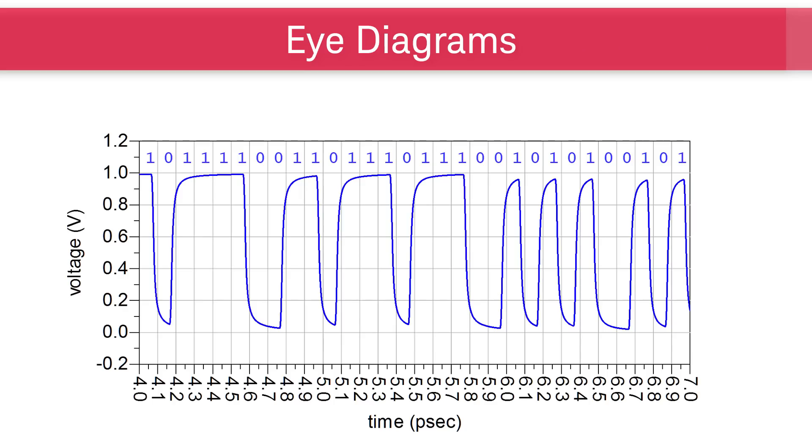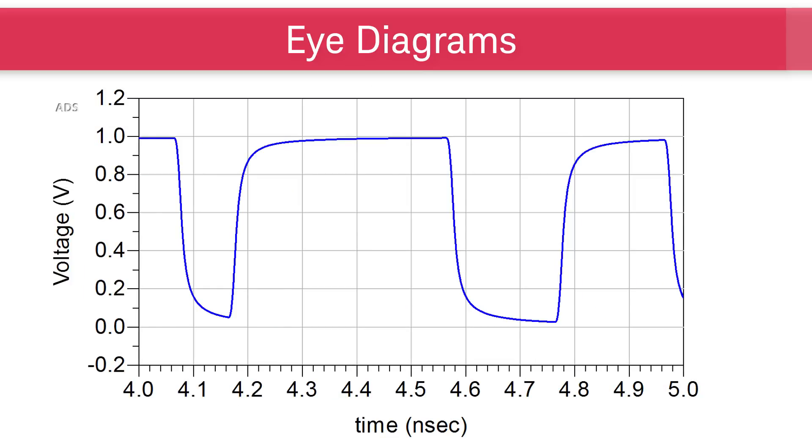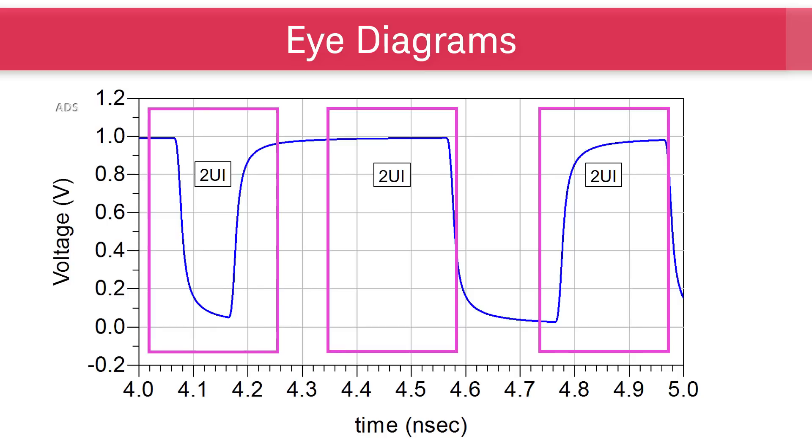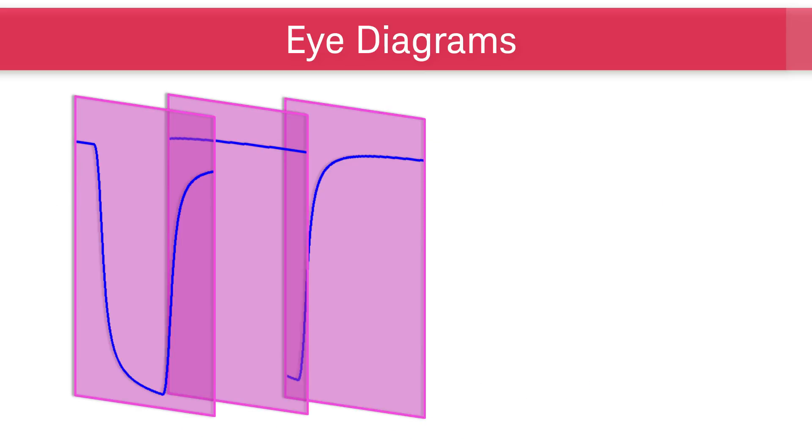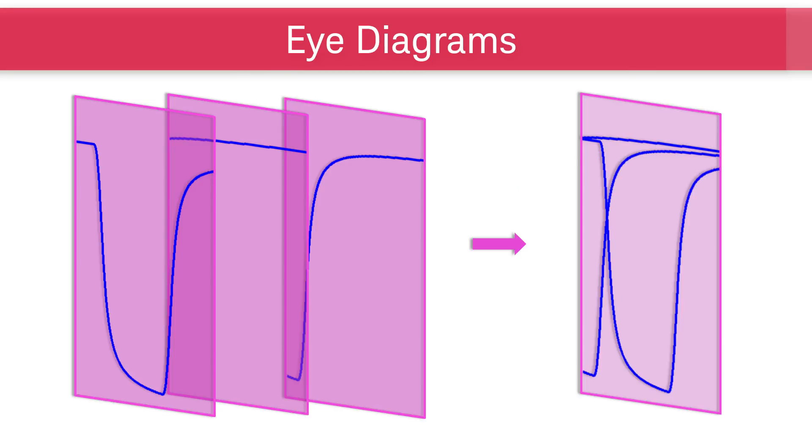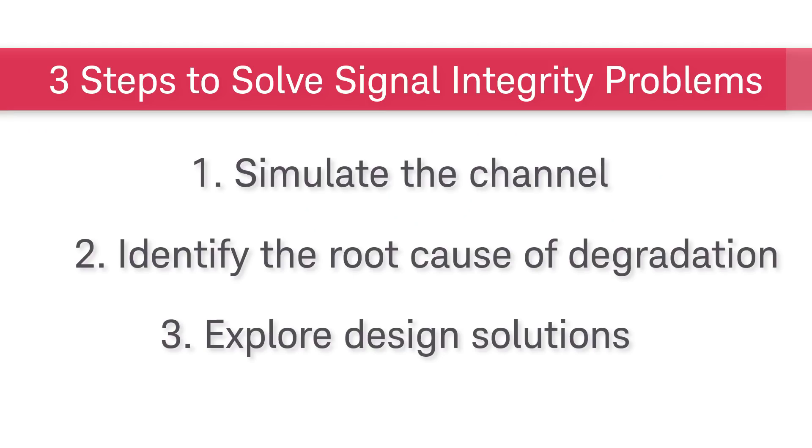To create an eye diagram, we start with the pseudo-random binary sequence. We then use our knowledge of unit intervals, the UIs, to slice the PRBS waveform. We overlay the slices so that all rising and falling edges can be seen. Eye diagrams give us a concise graphical representation of how the channel degrades the signal.